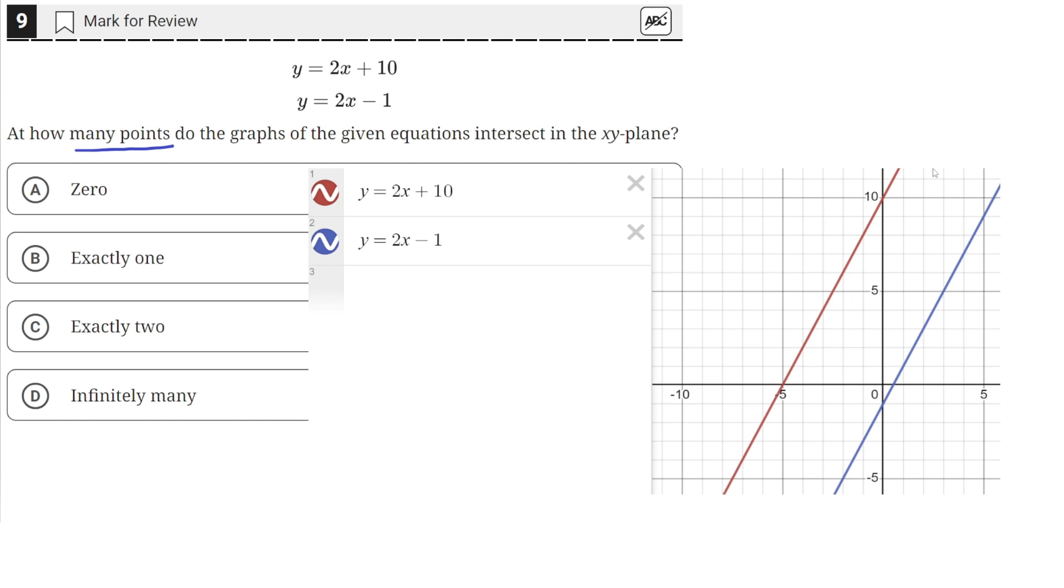And as you can see from this graph, these graphs have the same slope. The slope of both of these graphs is 2.